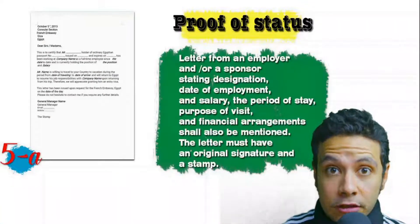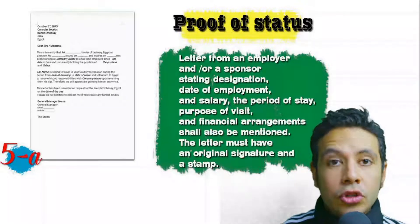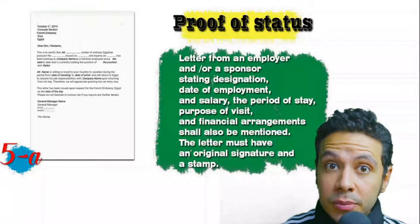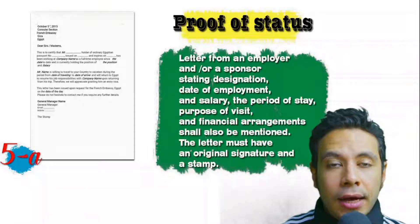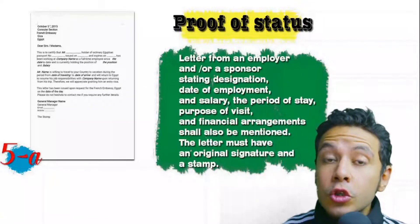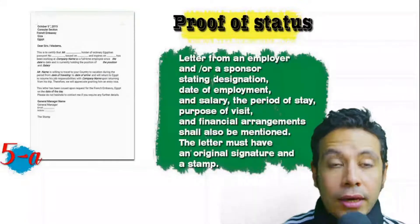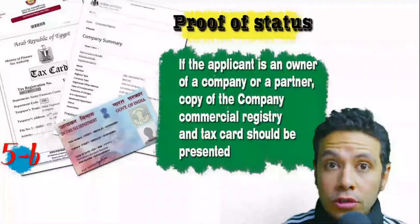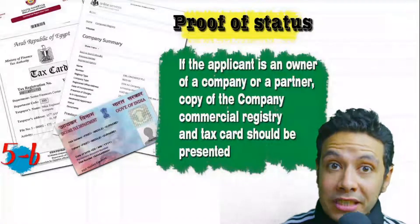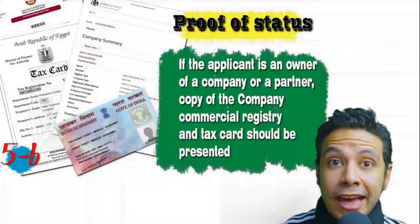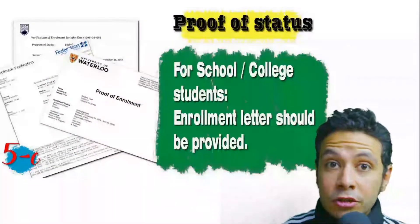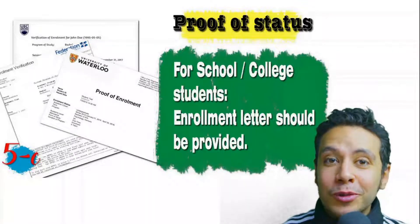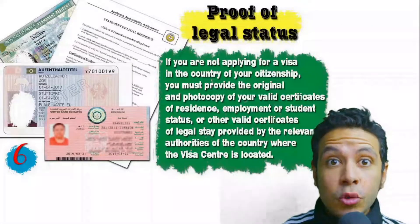In most visa application processes you will be required to provide a proof of status. If you are an employee, you will need a letter from your employer or HR department mentioning your name, work details, salary, address, and contact numbers — with an original signature and stamp. If you own a company, your commercial registry and tax card must be presented. If you are a student, an enrollment letter from your university or school should be provided.